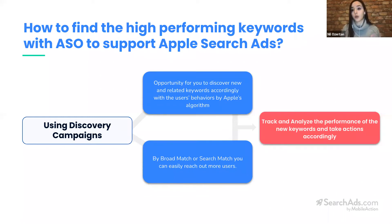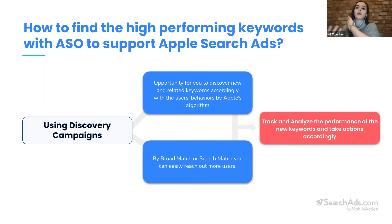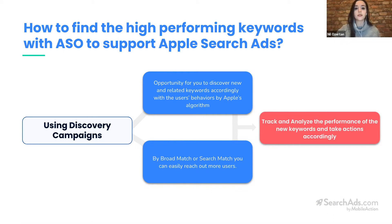On the other hand, if we have irrelevant terms where we're spending a lot of money but the keyword isn't bringing installs and isn't relevant to our app, we don't want to spend money on that keyword. Discovery campaigns also allow us to block spending on particular keywords by negating them, so we will no longer be spending on those. If you can't yet decide whether a search term could be well-performing, you can give it more time to observe and re-check after a certain period.